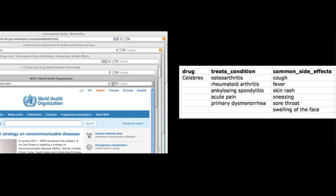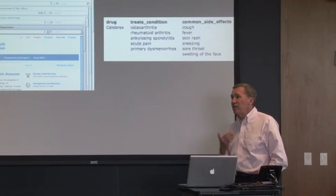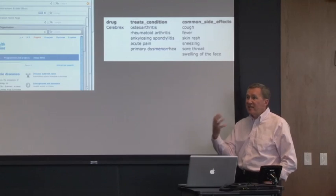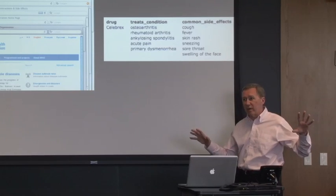The result of this so far is that Nell has a collection of 15 million beliefs that it's considering at different levels of confidence, and that it's integrating into a vast network of beliefs.